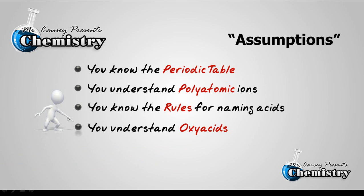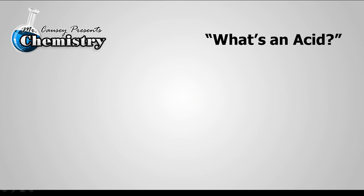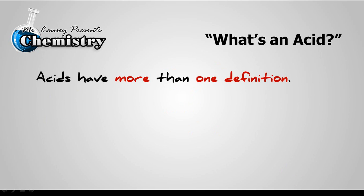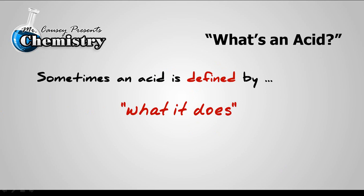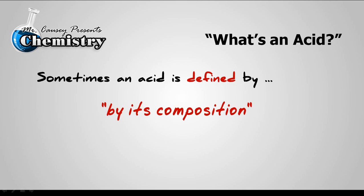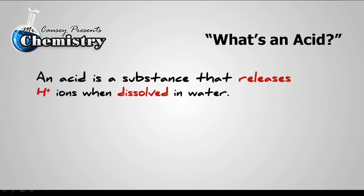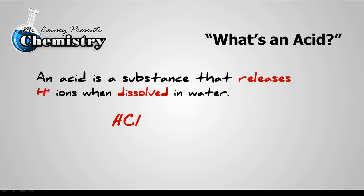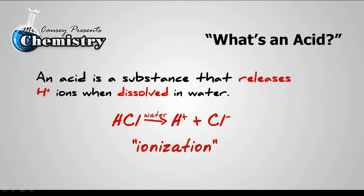It's important that you have some background. What's an acid? Well, an acid has more than one definition — sometimes an acid is defined by what it does, and sometimes by its composition. But for our purposes, an acid is a substance that releases hydrogen ions when dissolved in water. We call this an Arrhenius acid. An example would be hydrogen chloride: when dissolved in water, we get hydrogen ions and chlorine ions. This is called ionization, which occurs whenever a covalent compound produces ions in water, and the concentration of those ions is referred to as the pH.